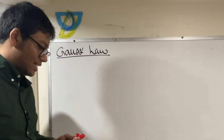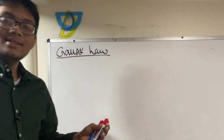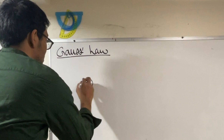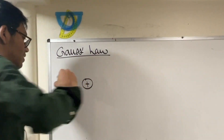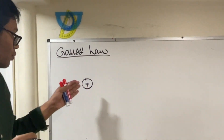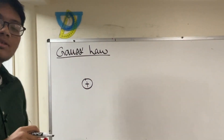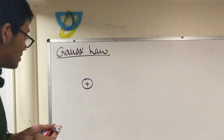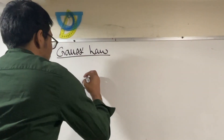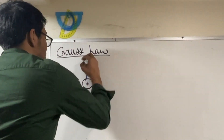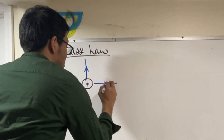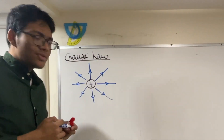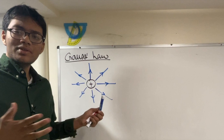Here's how we can understand it. Let's say you have a positive charge — starting from the real basics here. What does the electric field for a positive charge look like? Well, it's pretty simple. The electric field for a positive charge is radially outwards in every direction. Gauss thought, what if I put a circle here?